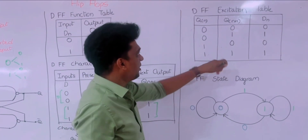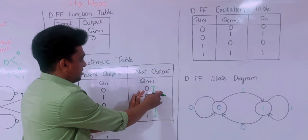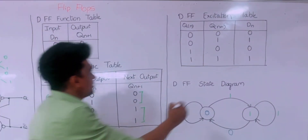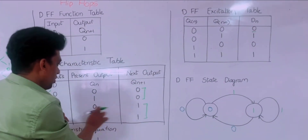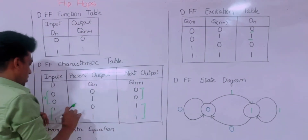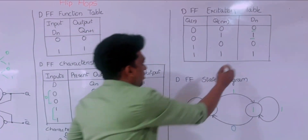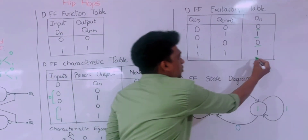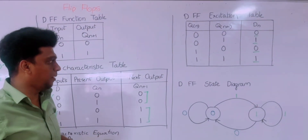Then comes the excitation table. For the separate present state and next state, we are getting the inputs. For 0,0 it is 0. Then for 0,1 we are getting 1. And for 1,0 we are getting the input 0. Then for 1,1 we are getting the input as 1. So this is the simple excitation table of the D flip-flop.